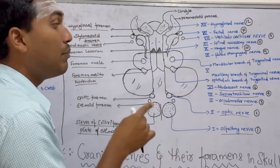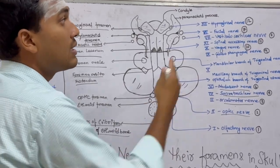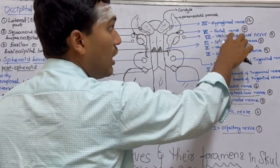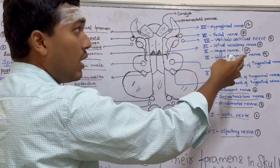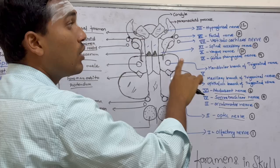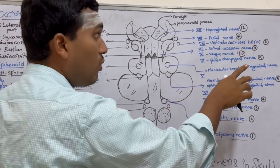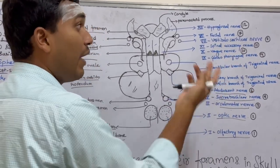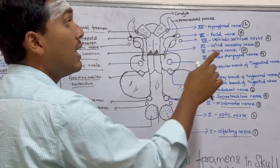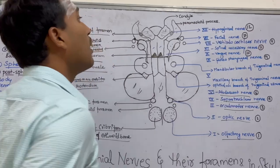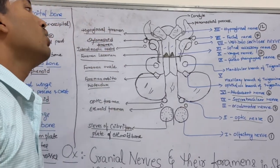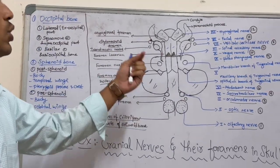The sixth is the abducent nerve, seventh is the facial nerve, eighth is the vestibulocochlear nerve, ninth is the glossopharyngeal nerve, tenth is the vagus nerve, eleventh is the spinal accessory nerve, and twelfth is the hypoglossal nerve. These are the 12 cranial nerves which arise from the cranial cavity.